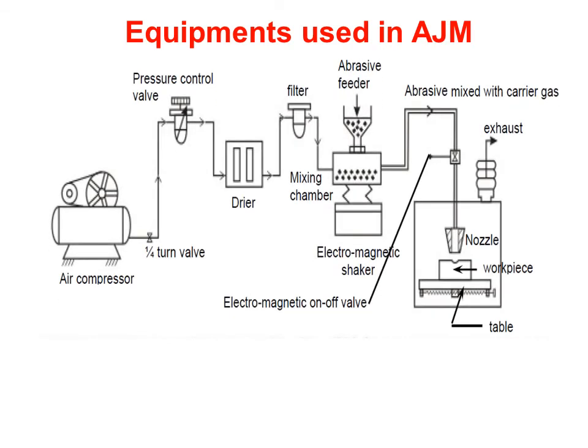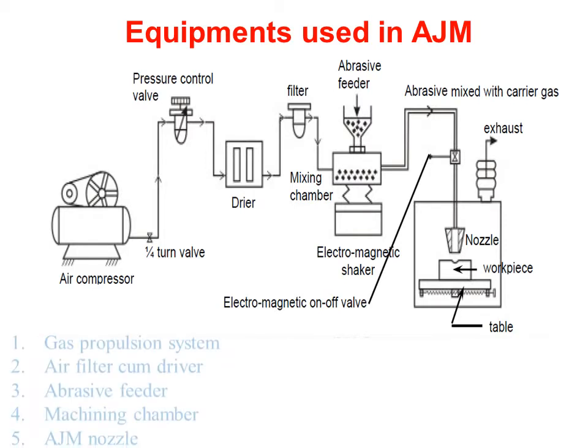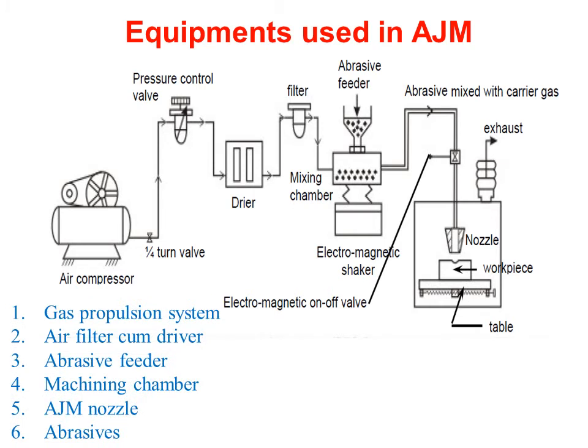Equipments used in AJM. This is the schematic arrangement of the abrasive jet machining process. The equipment is grouped into 6 subgroups: 1. Gas propulsion system, 2. Air filter cum dryer, 3. Abrasive feeder, 4. Machining chamber, 5. AJM nozzle, 6. Abrasive recovery system.